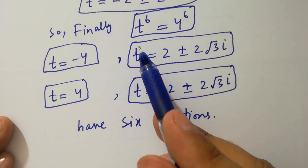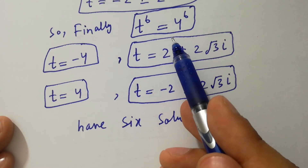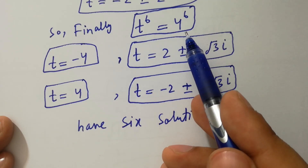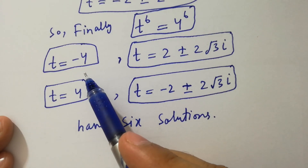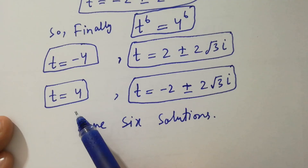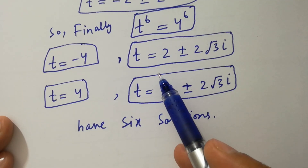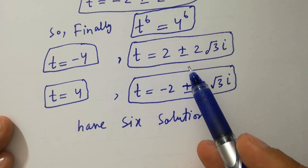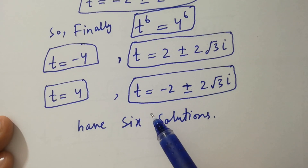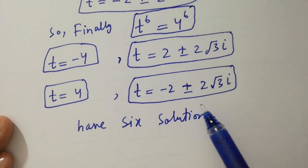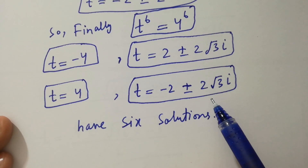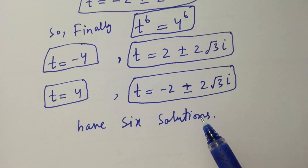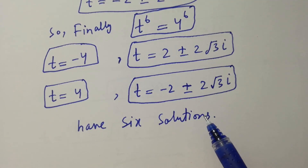So finally, t to the power 6 equals 4 to the power 6 has 6 solutions: t equals minus 4, t equals 4, t equals 2 plus or minus 2 square root of 3 i, and t equals minus 2 plus or minus 2 square root of 3 i. Thanks for watching this video, please subscribe to this channel to get notifications of my new videos.